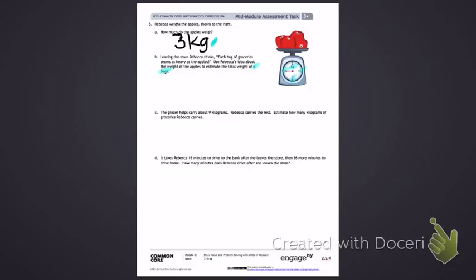So I'm going to start by making a tape diagram. I have my tape diagram. I'm going to draw 6 groups to represent my 6 bags. 1 group weighs 3 kilograms.